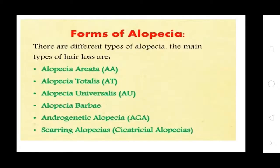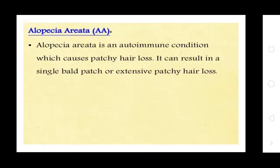Forms of Alopecia. There are different types of alopecia: Alopecia Areata, Alopecia Totalis, Alopecia Universalis, Alopecia Barbae, Androgenic Alopecia, and Scarring Alopecia.